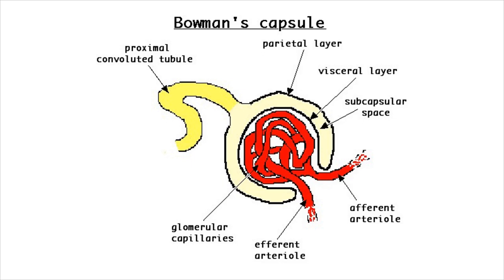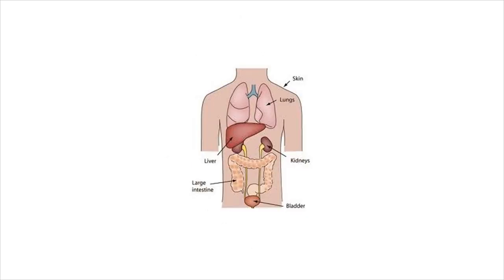The key difference between them is that Bowman's capsule is the cup-shaped end of a renal tubule or nephron enclosing a glomerulus, which performs the first step in the filtration of blood to form urine, and combined with the renal glomerulus, it forms the Malpighian capsule. This article discusses the difference between Bowman's capsule and Malpighian capsule in detail.